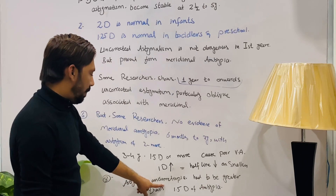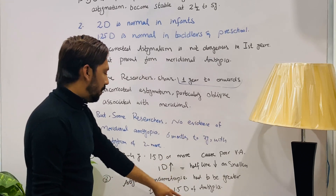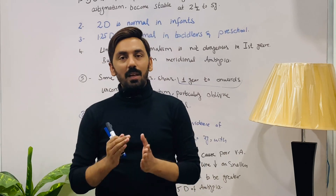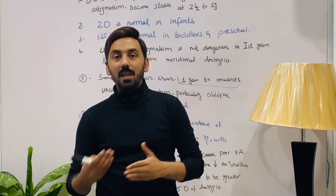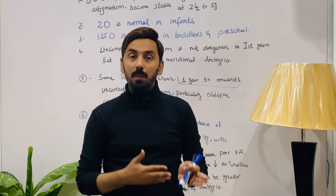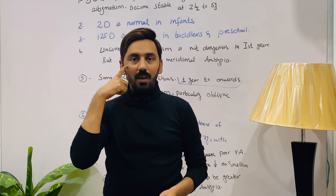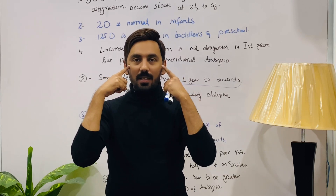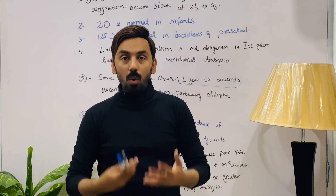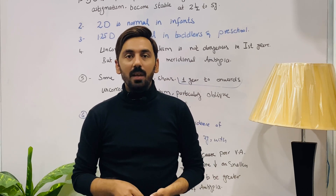Astigmatic anisometropia of greater than 1.5 diopters can cause amblyopia. For example, if one eye has minus 2.00 cylinder and the other has minus 6.00 cylinder, the difference of more than three diopters of astigmatism between the eyes can cause anisometropic amblyopia.